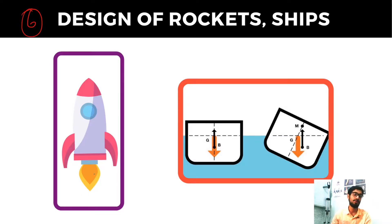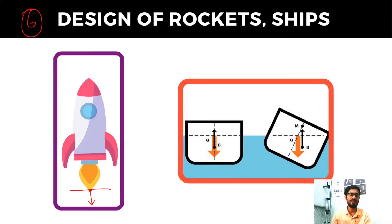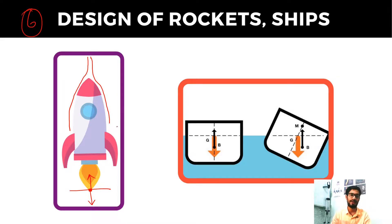Number six is the design of rockets and ships. In a liquid-propellant rocket, the liquid applies a force according to Newton's third law — a certain force that causes the rocket to go upward. Along with that, you need an aerodynamic shape for the rocket so that it separates the air easily, reduces drag force, and overcomes air resistance.